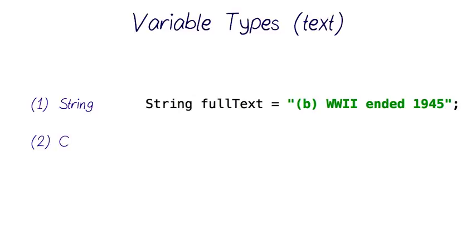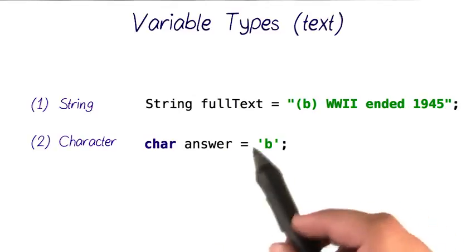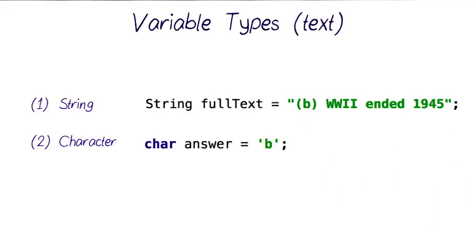Another text data type is called a character, which is shortened to char. It allows you to store just a single letter without having to store it in a string. Notice that we're using single quotes here now, instead of the double quotes with a string.